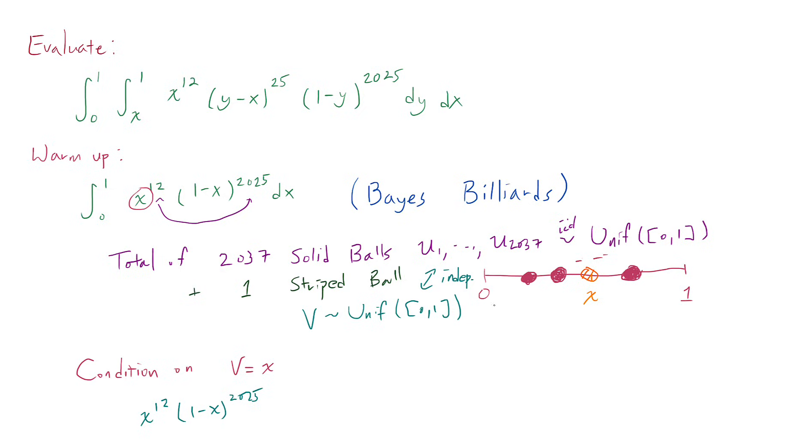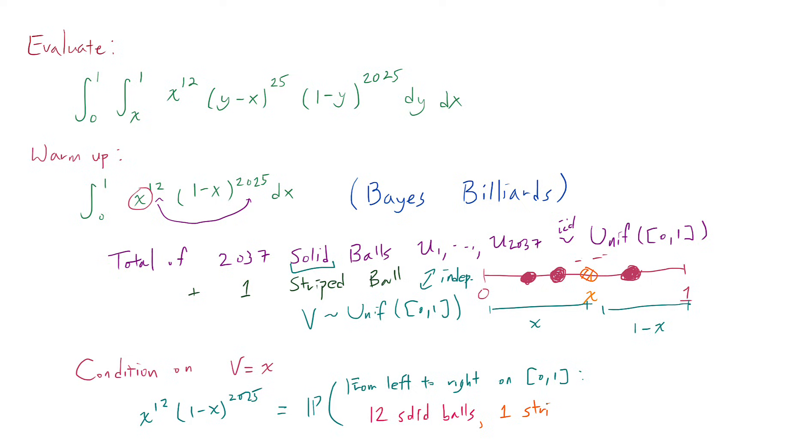And now, what really is captured by this X to the 12th times 1 minus X to the 2025? Well, you can think of it as follows. So we have the interval here of length X, and we have the interval here of length 1 minus X. And for each one of the solid balls, the probability it's going to land in the first interval is exactly X. It's X divided by the entire length of the interval, which is 1. And the probability that a solid ball lands right here to the right of the striped ball is 1 minus X. So this expression really is very closely tied with the probability that we have 12 solid balls, and then the unique, obviously just one, one striped ball, and the rest of 2025 solid balls to the right of the striped ball.